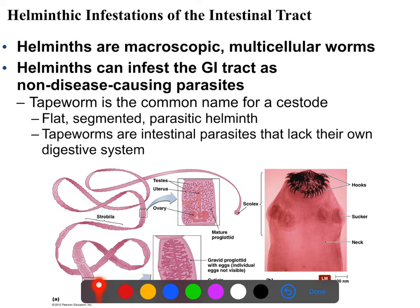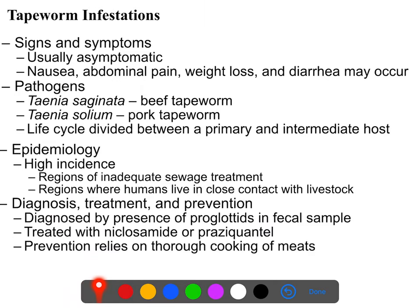Infestation with a tapeworm is at first relatively asymptomatic. If the tapeworm continues to grow, it will eventually cause bloating, extreme intestinal pain, and basically a lack of ability to thrive — you'll eat a lot but won't gain any weight and will become malnourished. Symptoms include abdominal pain, nausea, weight loss, and diarrhea.